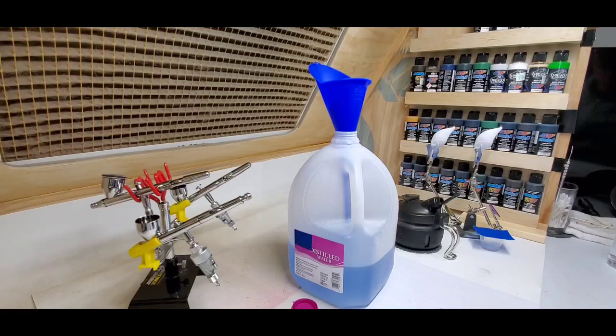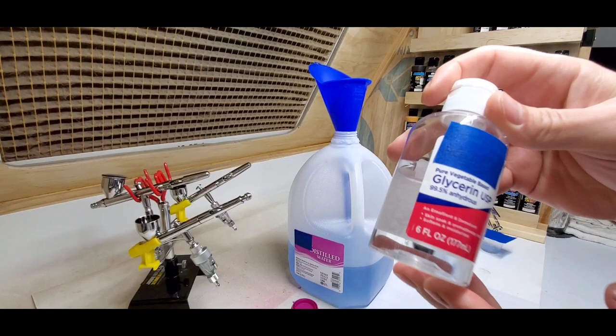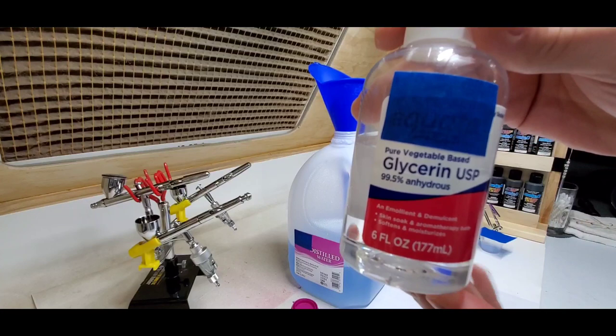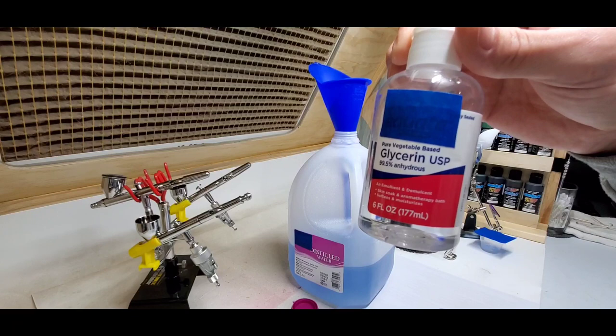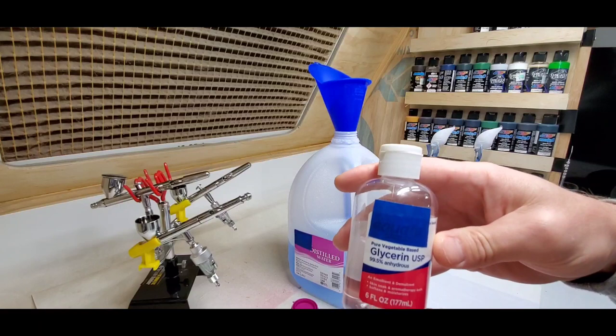And our next ingredient is some glycerin. This is the product you only buy one time and it'll last you a long time. This bottle right here is six ounces and it's about $4. So 60 drops, six zero, 60 drops of this into that container.